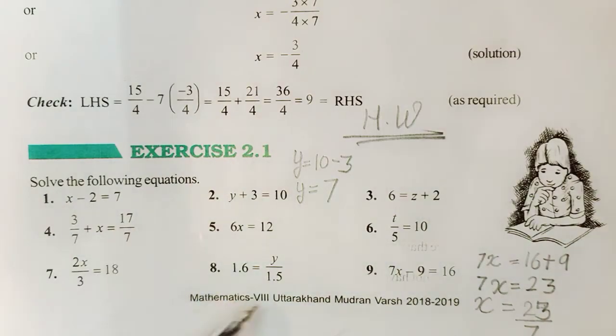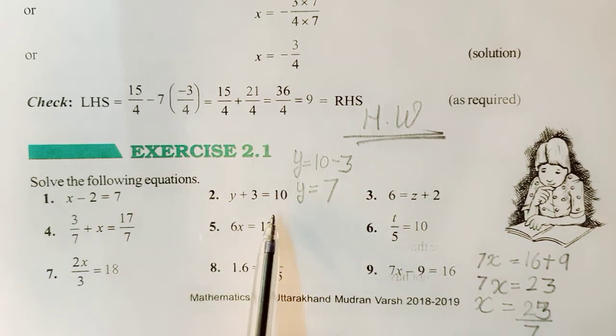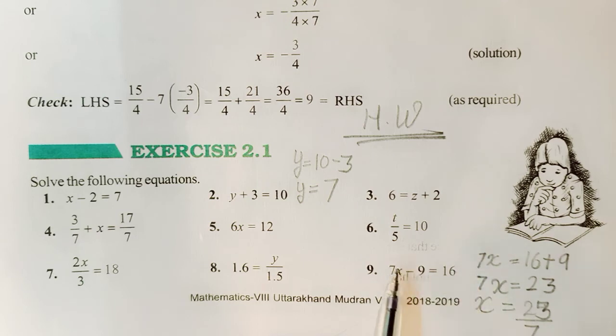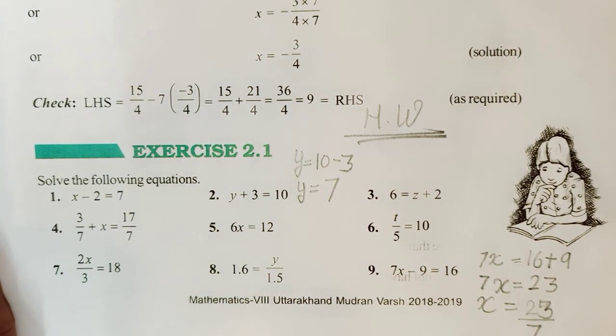Now class 8, majority of the questions I have solved for you. I have explained you. There are few parts which I have left for you girls to try on your own. Which are simple. Like this one see. You just need to take this 3 to the other side. This one I have left for you to try. So plus 9 and upon 7. So just try these on your own to see whether you have understood or not.